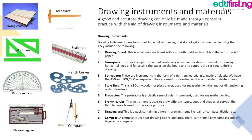Number seven: drawing sheet sets. This is a pack containing different drawing items like a set of compasses, divider, and so on, along with stencils that can be used in construction. Number eight: compass. A compass is used to draw circles and arcs. There are small bow compasses and large-size compasses, depending on the nature and size of the drawing. These are some of the drawing instruments used in technical drawing.